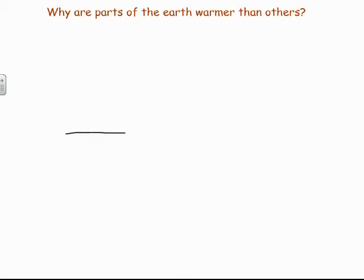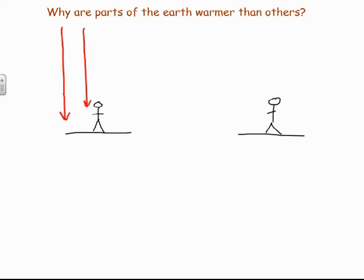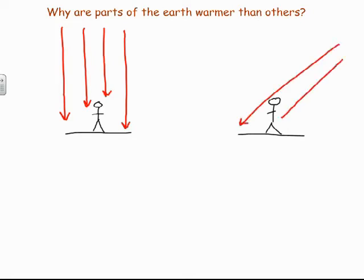Imagine two people standing at two different places, and the sun hits those people at different angles. Here are two people at different places — the sun is going to come and strike these people at different angles. Here are the rays of the sun, the solar radiation — the solar energy coming down on each person. You'll notice the thing that's different about them is the angle at which that energy is hitting them.